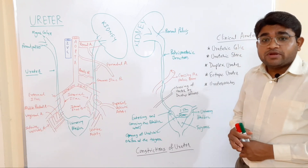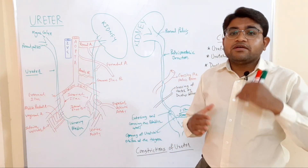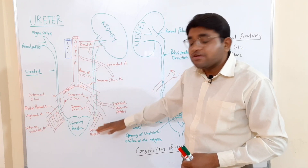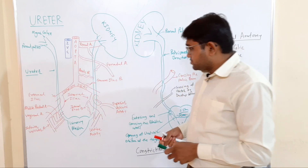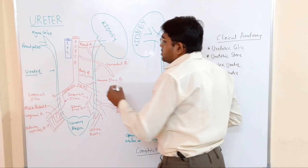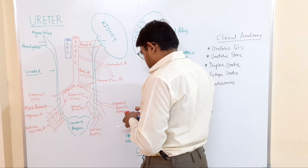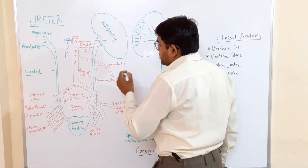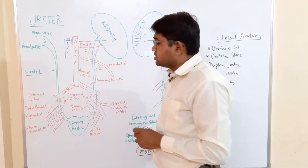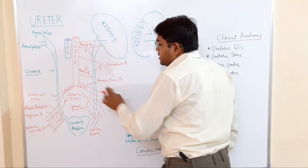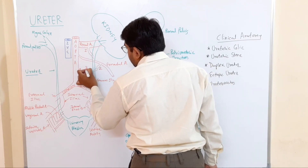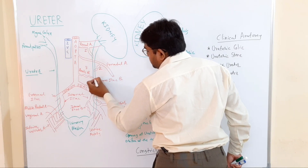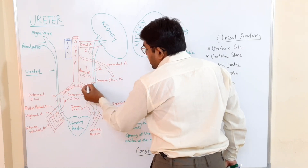Arterial supply of the ureters is divided into three parts. For the upper part, there are three arteries: a branch from the renal artery, a branch from the gonadal arteries, and an aortic branch. For the abdominal part: branches from the gonadal arteries, an aortic branch, and branches from the common iliac artery.